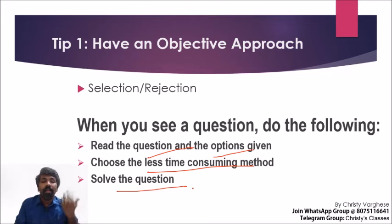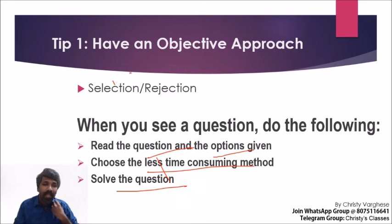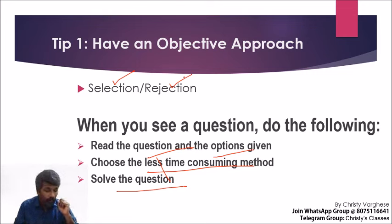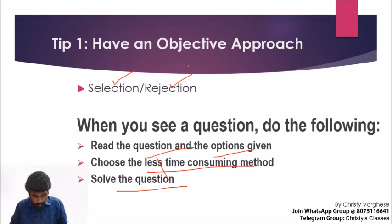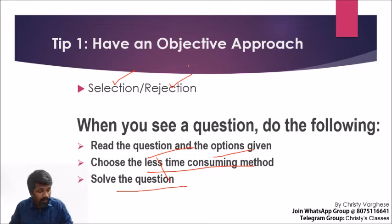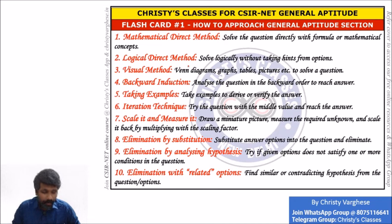When thinking about different methods, consider both selecting answers and rejecting answers — both are very important. Some questions you select the right answer; other questions you reject the three wrong answers, and whatever remains is the right answer. You are not actually finding the correct answer at all — you are only finding the three wrong ones.